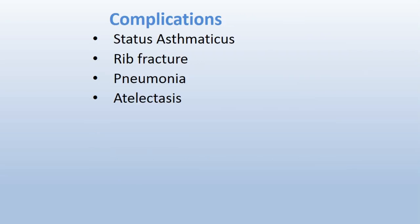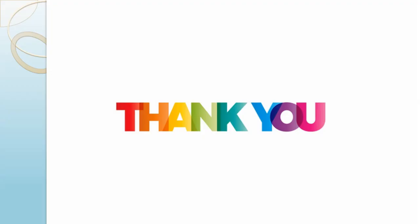Finally, complications that can develop from asthma include status asthmaticus, rib fractures, pneumonia, and atelectasis — these are the commonest complications in asthmatic patients. Thank you very much; feel free to leave a comment or suggestions on how to make these videos better. See you next time.